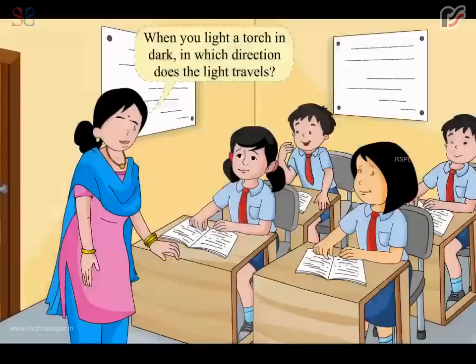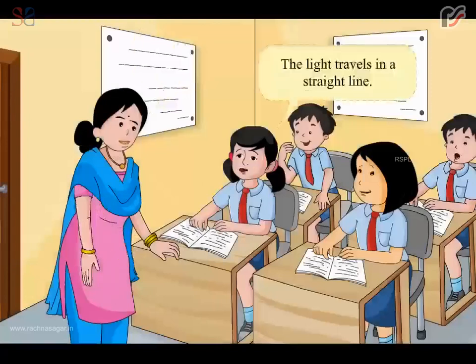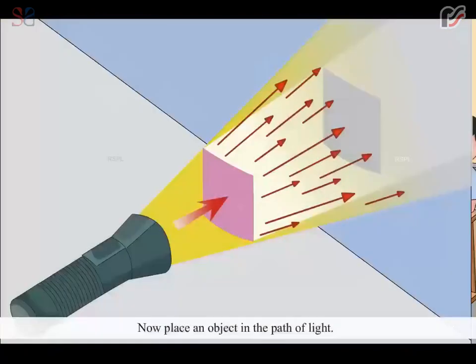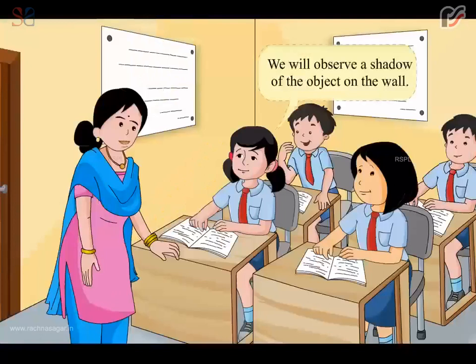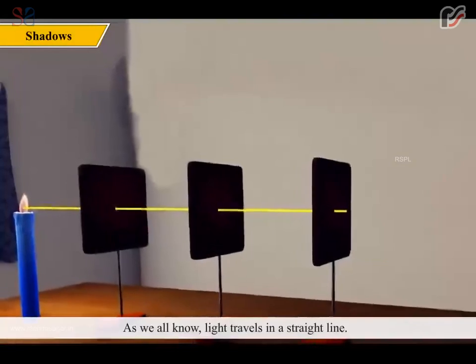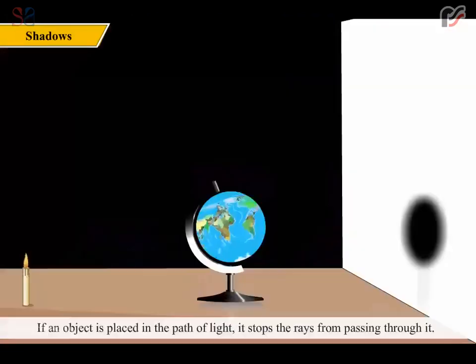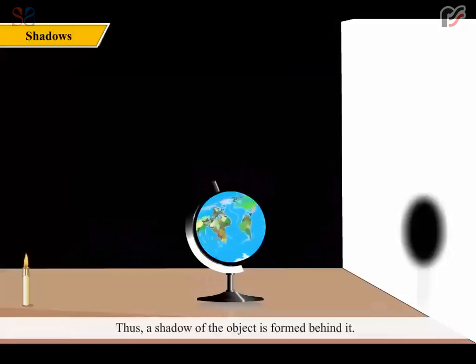When you light a torch in the dark, in which direction does the light travel? The light travels in a straight line. Now place an object in the path of light. What do you observe? We will observe a shadow of the object on the wall. As we all know, light travels in a straight line. If an object is placed in the path of light, it stops rays from passing through it. Thus, a shadow of the object is formed behind it.